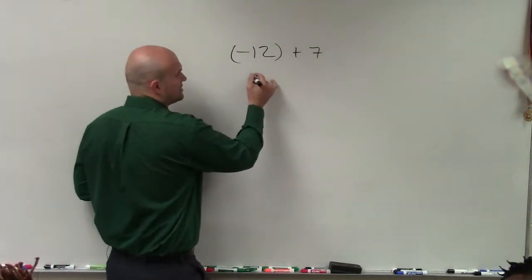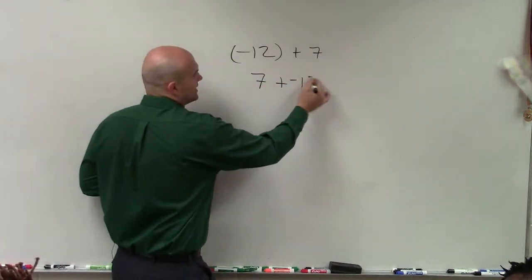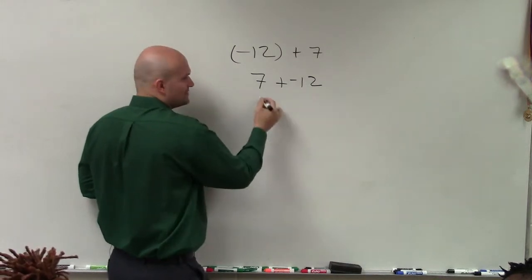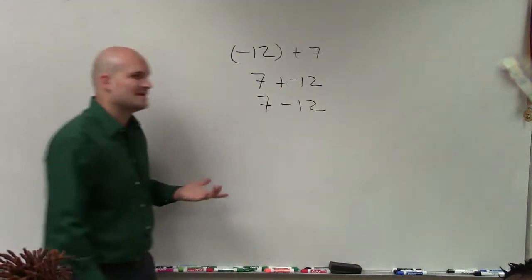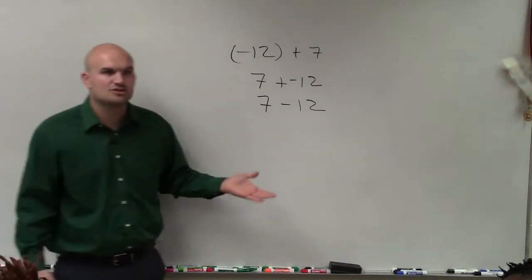So if I just kind of rewrote this, it would be 7 plus negative 12. Well, plus a negative is really just 7 minus 12. That's the same thing. Adding a negative is the same thing as just subtracting.